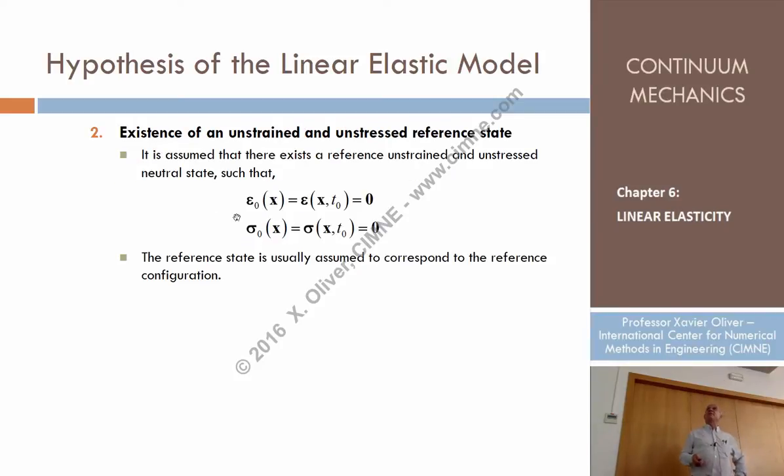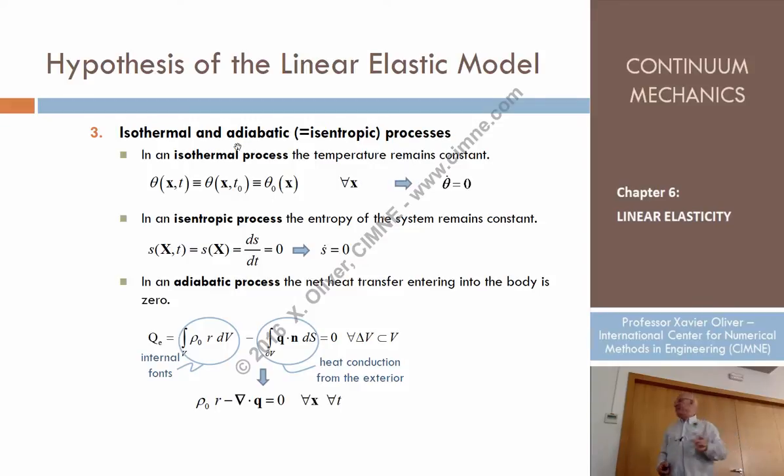The second hypothesis is that there is a state in which strains are zero and stresses are zero. Some of these conditions can be released, but essentially we consider that. At the deformed configuration, when I take my material at the beginning, of course the strains at the reference configuration are always zero by definition. But I assume that the stresses are zero too. So there is one state, in general it would be the reference configuration, where stresses and strains will be zero. That's nothing too complicated. And then this is two hypotheses that at the beginning we'll use.